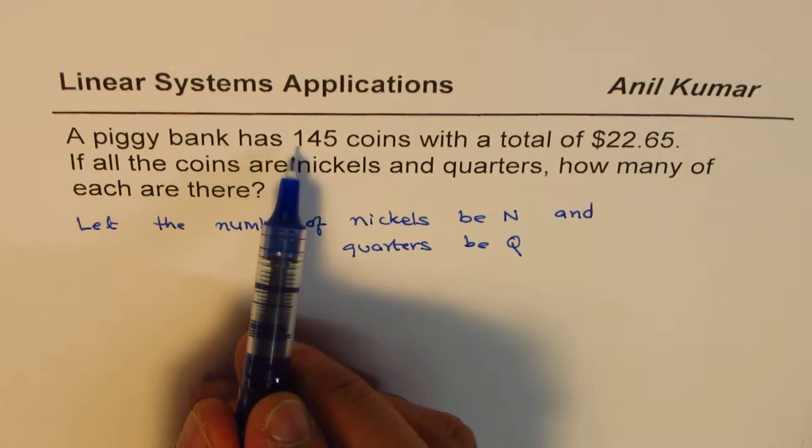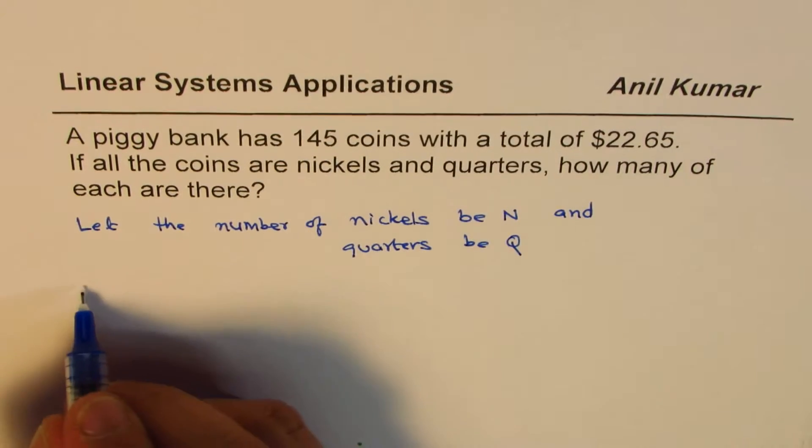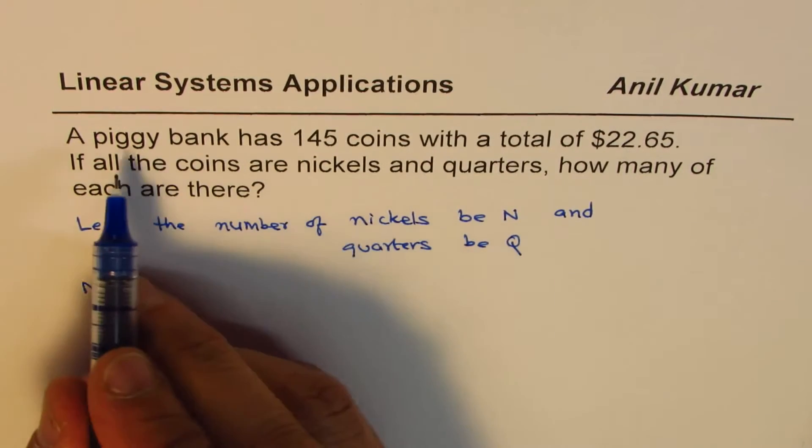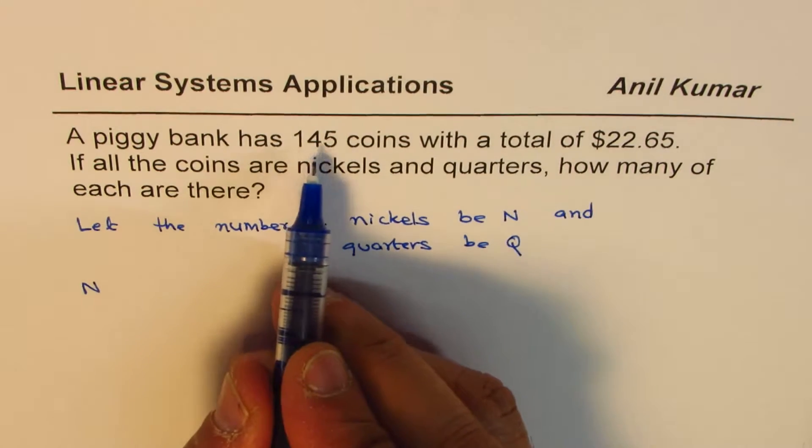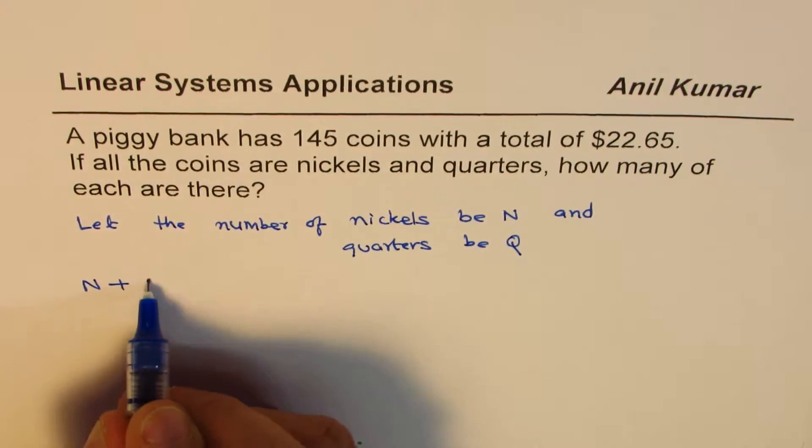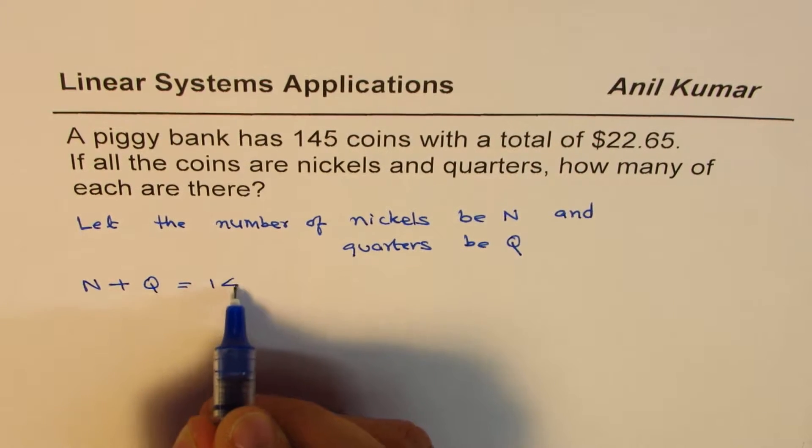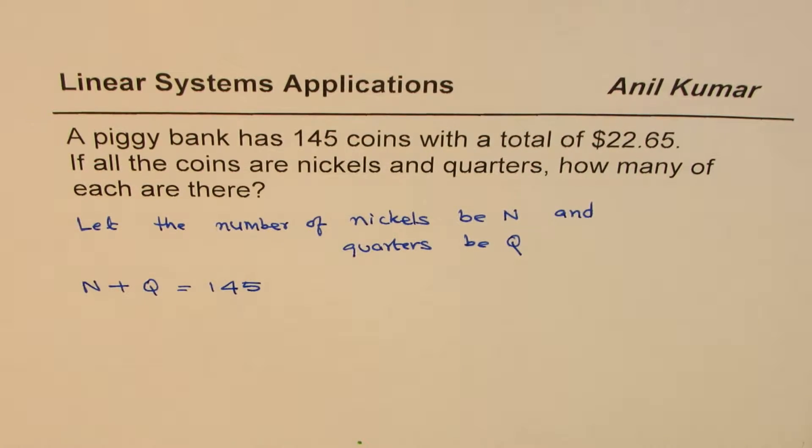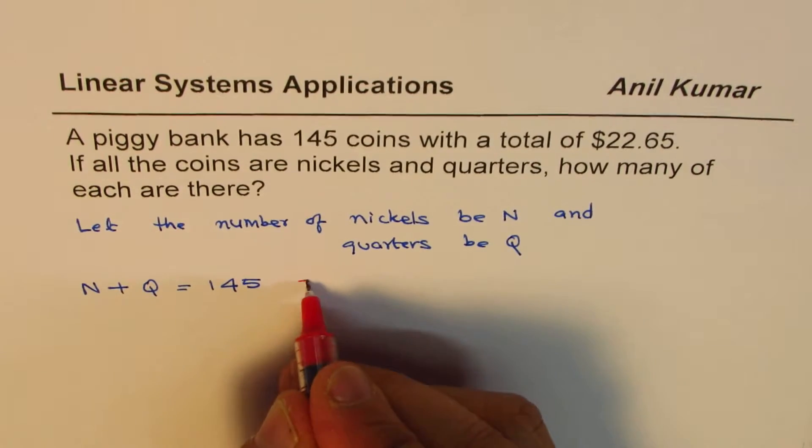Now it says the piggy bank has 145 coins. So we get one statement, which is a piggy bank has 145 coins. And this could be written as an equation, N plus Q equals to 145, correct? And we'll write this as equation number 1 for us.